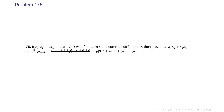Problem 175: If a1, a2, …, an are in AP with first term a and common difference d, prove that a1·a2 + a2·a3 + … + an·a(n+1) equals [a+(n−1)d][a+nd][a+(n+1)d] − [a−d]·a·[a+d] all divided by 3d, which equals (n/3)[3a² + 2and + (n²−1)d²].